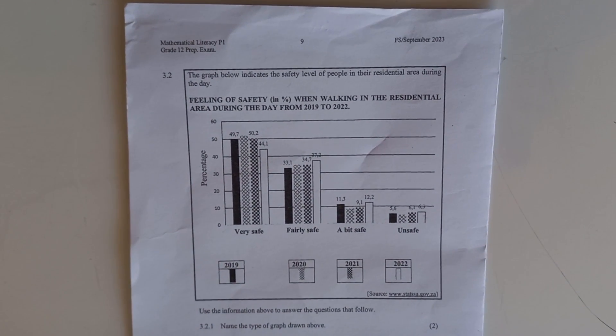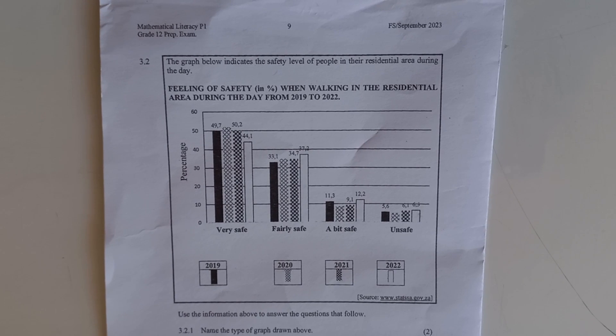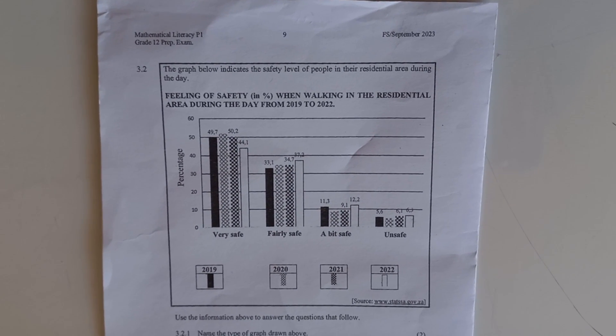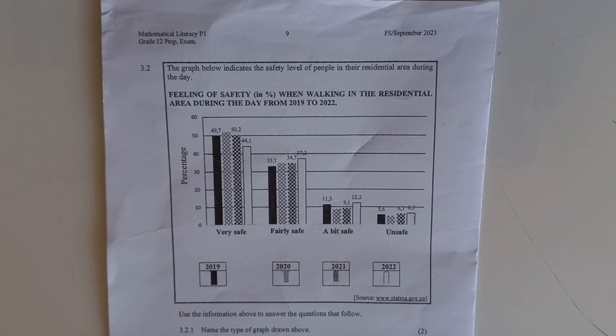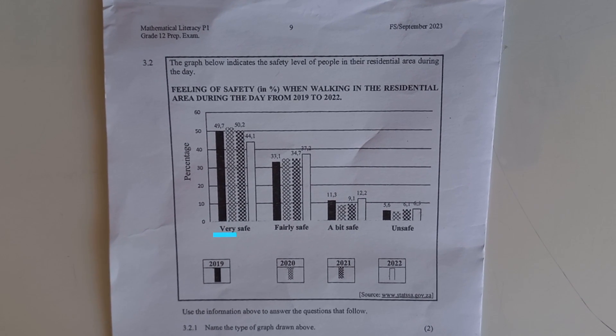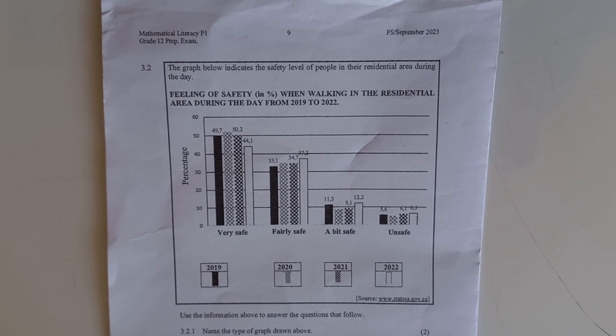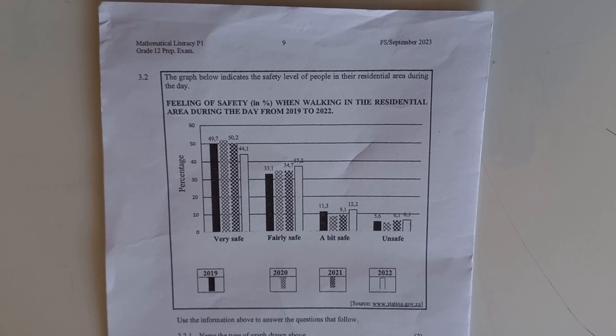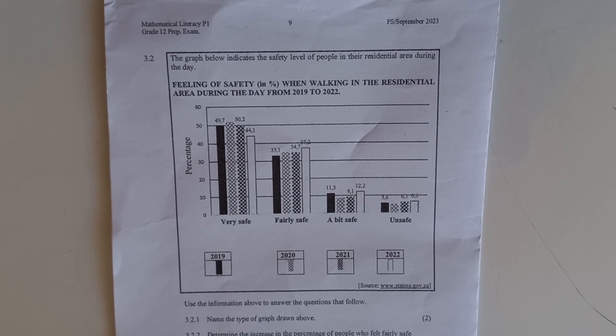When you get a question paper with graphs or any other information, take time and analyze what you are given before you start looking at the questions. They've given us the percentage on the side and at the bottom they're saying very safe, fairly safe, a bit safe, unsafe. On the top of each bar they've written percentages.